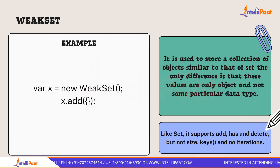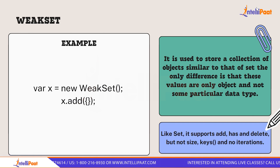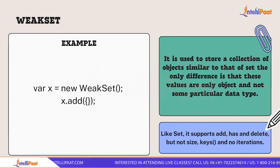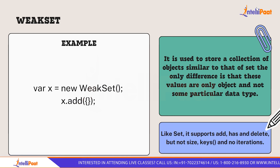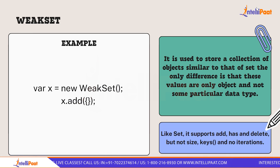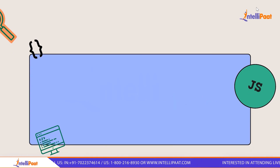You can add any object to a WeakSet. You cannot iterate through your WeakSet just like you cannot in a normal WeakMap. WeakSet only supports add, has, and delete methods. The has method returns true or false indicating whether the data is inside the WeakSet or not.